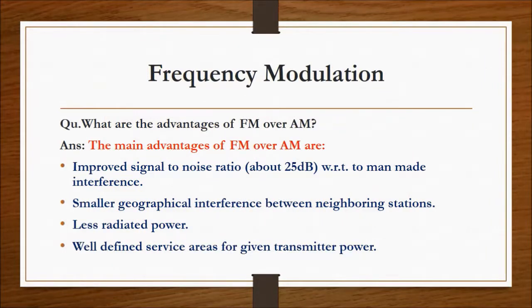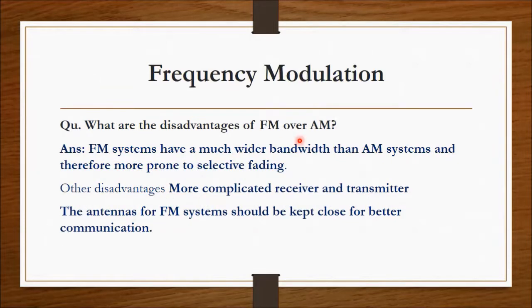What are the advantages of FM over AM? The main advantages are: improved signal-to-noise ratio of about 25 dB with respect to man-made interference, small geographical interference between neighboring stations, less radiated power, and well-defined service areas for a given transmitter power. The disadvantages of FM over AM are: FM systems have a much wider bandwidth than AM and are therefore more prone to selective fading, more complicated receiver and transmitter design, and FM antennas should be kept close together for better communication.